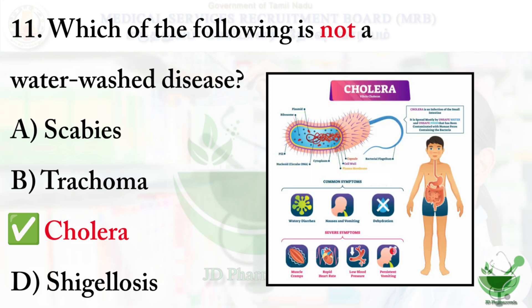Cholera is a water-borne disease — it spreads when people drink contaminated water or eat food prepared from it. Commonly spread water-borne illnesses include typhoid, cholera, dysentery, gastroenteritis, and hepatitis. Water-washed diseases, by contrast, are caused by poor personal hygiene due to an inadequate supply of clean water, and include Shigella, Scabies, and Trachoma — which is a highly contagious eye infection.